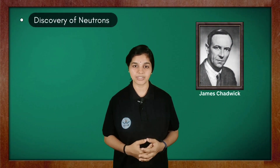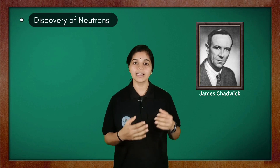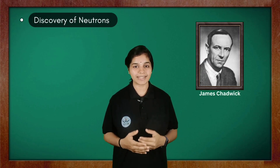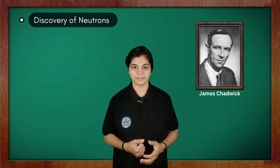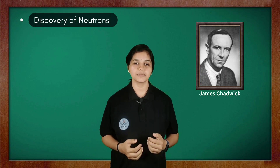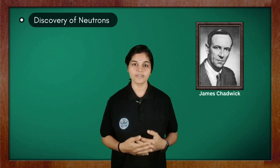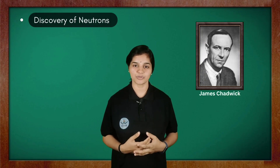Later on, neutrons were discovered by Chadwick by bombarding a thin sheet of beryllium metal with alpha particles. The subatomic particle neutron is neutral and has no charge.